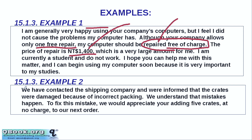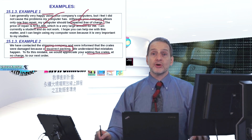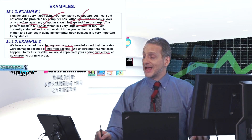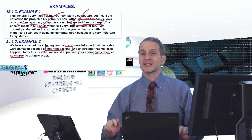Here's the business-to-business example. 'We have contacted the shipping company and were informed that the crates were damaged because of incorrect packaging.' He's not being angry — he's just saying this is not our fault, this must be your fault. 'We understand that mistakes happen. To fix this mistake, we would appreciate your adding five crates at no charge to our next order.' Very clear — we lost five crates, you should give us five crates in the next order. Very positive.